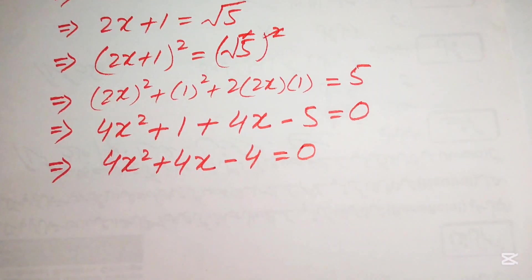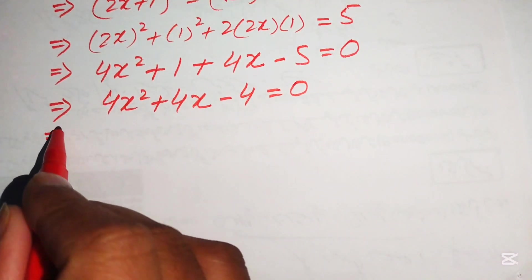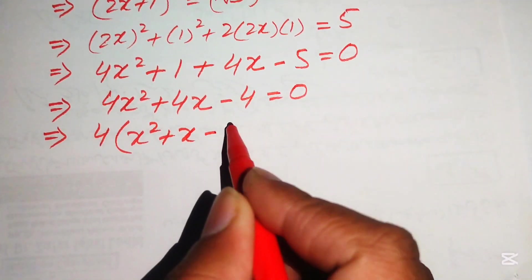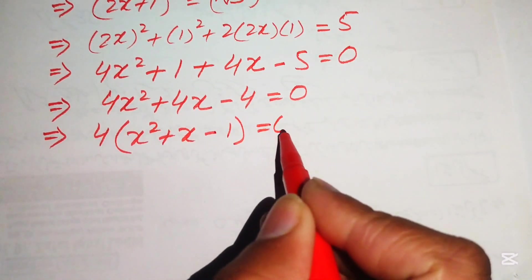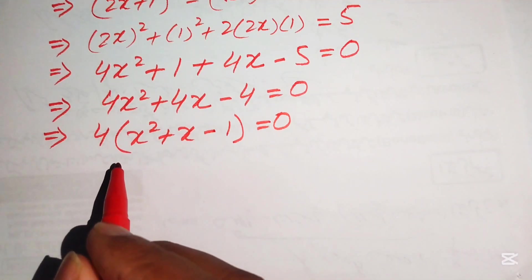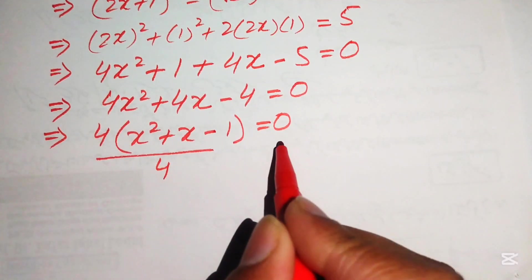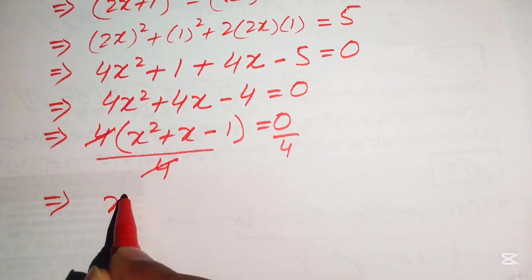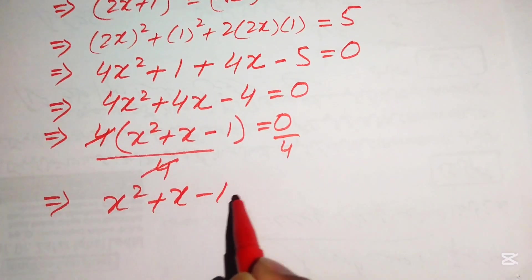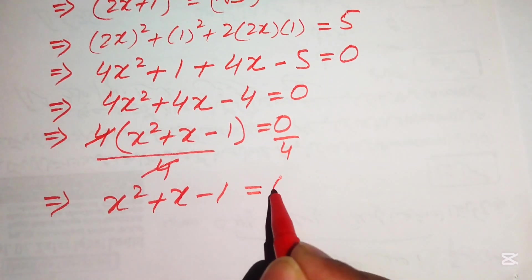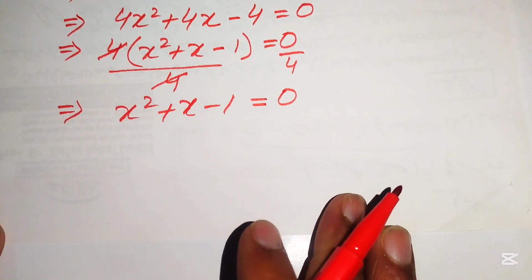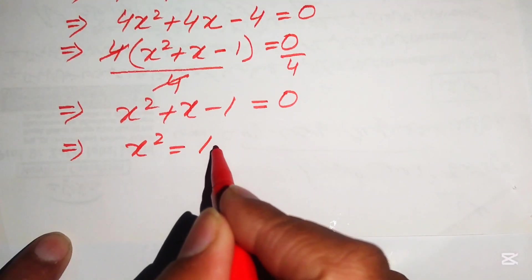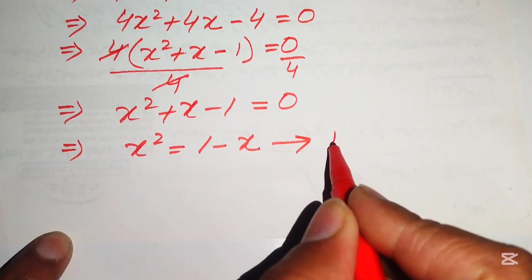Simplifying, we have 4x² + 4x + (1 - 5) = 4x² + 4x - 4 = 0. We factor out 4 to get 4(x² + x - 1) = 0, then divide both sides by 4, yielding x² + x - 1 = 0. Moving x and minus 1 to the right-hand side gives x² equals 1 minus x. We call this Equation 1.